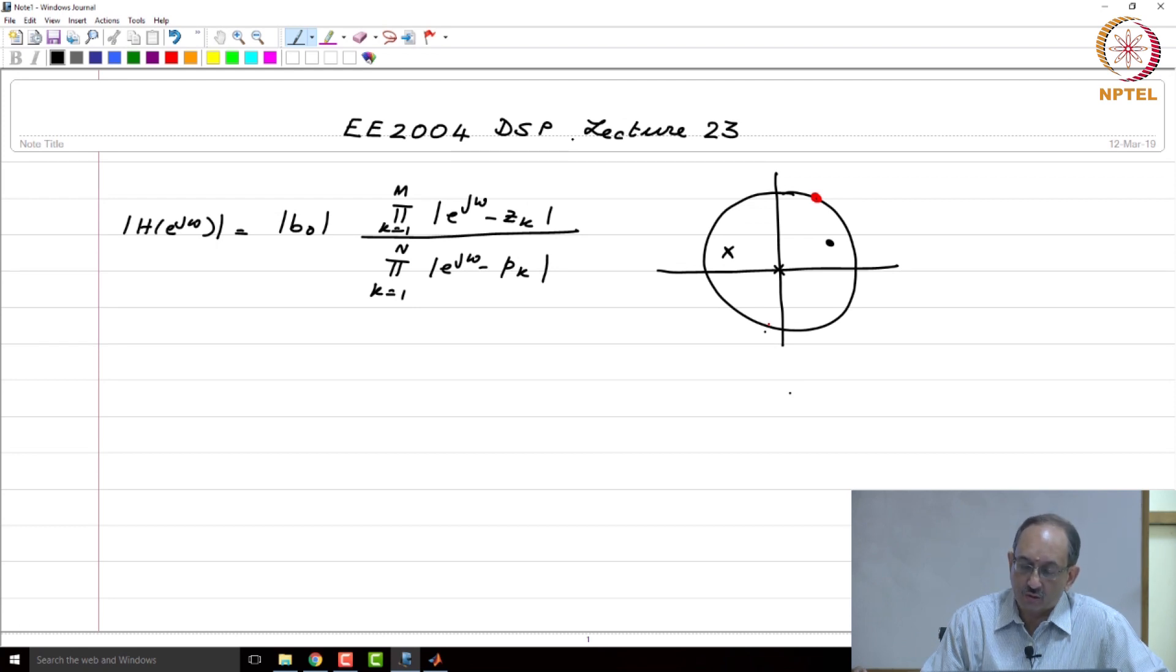And then you find the distances to all the zeros and then the distances to all the poles, and the product of these distances to all the zeros to all the poles gives you the frequency response at that particular point of frequency. And then as you go along the unit circle, depending upon the positions of the poles and zeros, the frequency response will vary. And we saw a simple example yesterday.